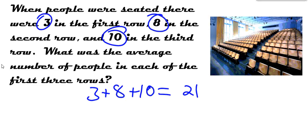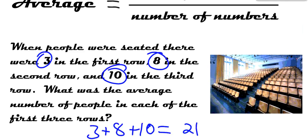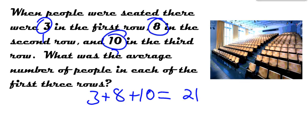Okay, next, the number of numbers. Well, I count one, two, three numbers, so now I'm going to divide by three. 21 divided by three, of course, is seven. So, that becomes seven people on average. I thought that was much easier than I remember. Average.